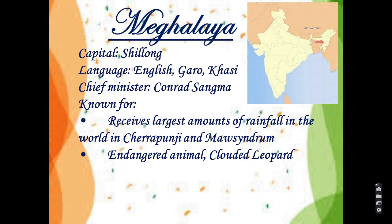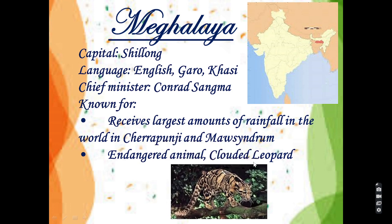The capital of Meghalaya is Shillong. The language used in Meghalaya is English, Garo and Khasi. The chief minister of Meghalaya is Conrad Sangma. Meghalaya is also known for the largest amount of rainfall in the world in Cherrapunji and Mawsynram. It is also known for the endangered animal the Clouded Leopard. You can see the Clouded Leopard in the picture.